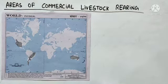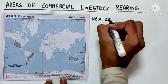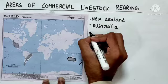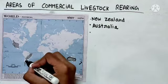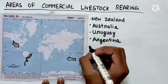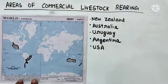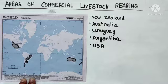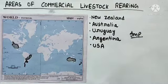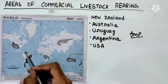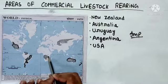Ab hum jaldi se iska map work dekh lete hain. Commercial livestock rearing ko practice kiya jaata hai yahan pe — yeh hai hamaara New Zealand. Ise Australia waale region mein bhi practice kiya jaata hai. Commercial livestock rearing ko Uruguay mein bhi practice kiya jaata hai. Ise Argentina mein bhi practice kiya jaata hai. Aur last mein ise United States of America mein bhi practice kiya jaata hai — yeh poora region hai aur maximum shaded region hamaara USA waale region mein aa raha hai. Sirf itni hi locations important hain, toh inhe learn kar lena. Tumhari book mein thode aur areas diye hain lekin tumhe wo learn nahin karne.